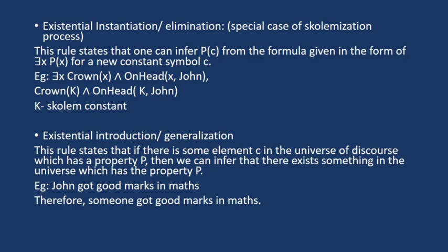That means if John scored good marks in maths, we can generalize this name John and we can directly infer that someone got good marks in maths. So this was all about how inference is done in first-order logic. Thank you.